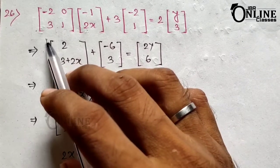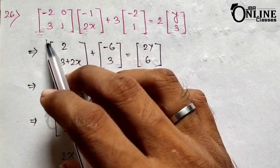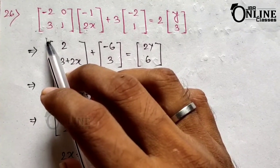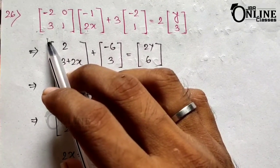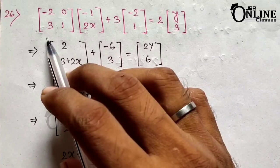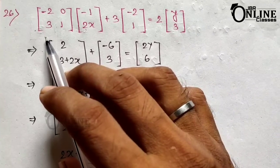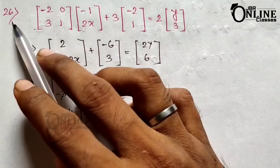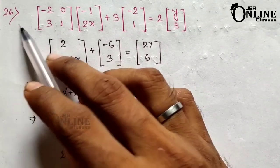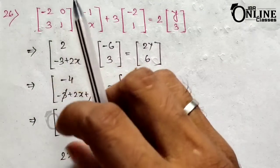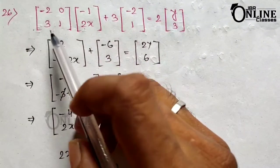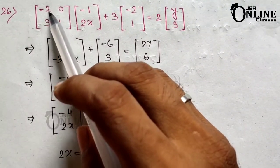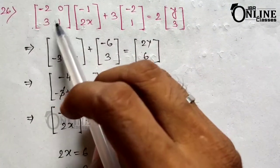In the previous video I solved from sum number 25 from exercise 8.3. Today I'm going to solve from sum number 26. So here in sum number 26 from exercise 8.3, there are two matrices: minus 2, 0, 3, 1.